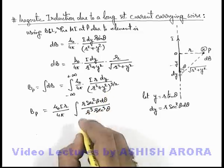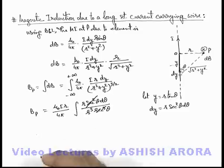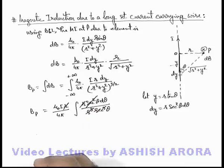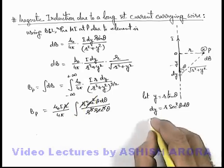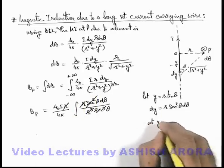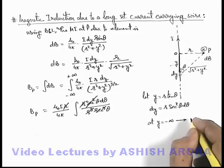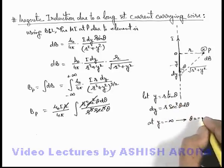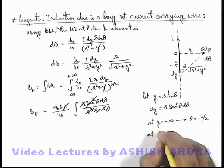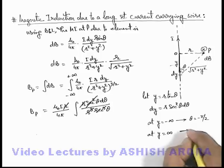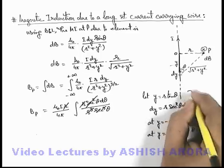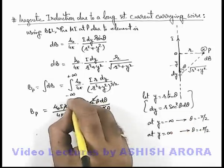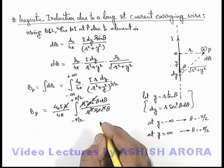Here the sec²θ cancels with the sec³θ term, and the r² also cancels, simplifying the expression. For the new limits of θ: at y = −∞, θ = −π/2, and at y = +∞, θ = +π/2. So the integration is now from −π/2 to +π/2.